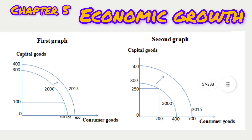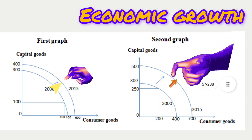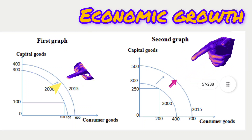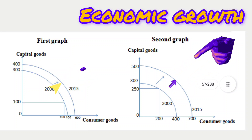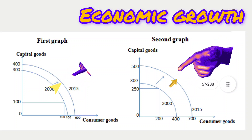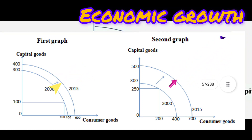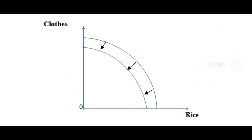Economic growth is the continuous increase in real output over a long period. Growth leads to an outward shift of the PPF, indicating a higher production capacity. This can result from an increase in resources or improved productivity. In the graph, economic growth is shown as a rightward shift of the entire PPF, reflecting an increase in the economy's capacity to produce more goods and services.